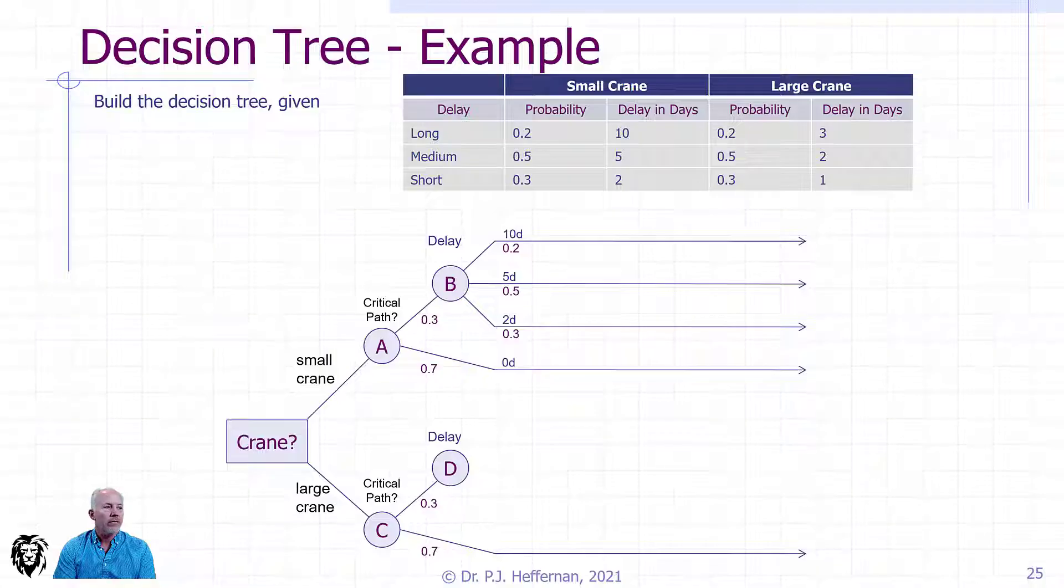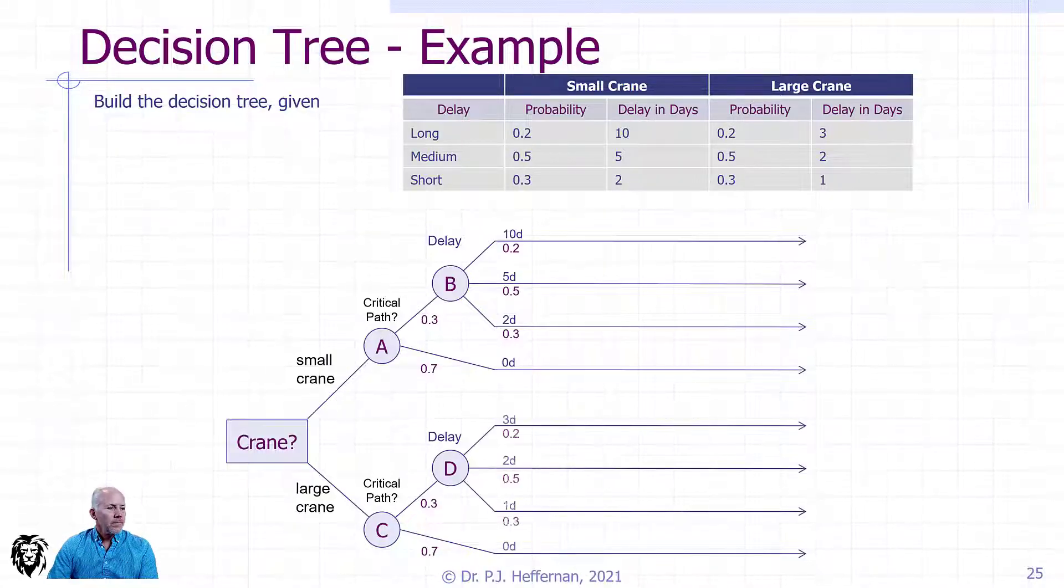If we're not on the critical path, it's going to have 0 days impact to the project. It doesn't cost us anything, so we just go with 0 days. Then we fill out the same information for the other side.